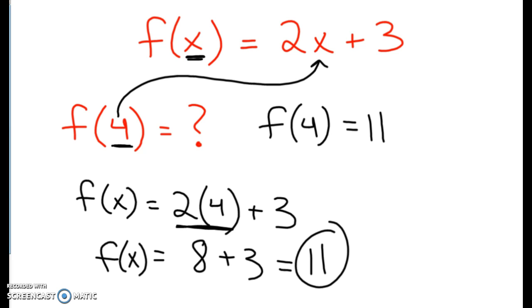And 4 was an input, because we were given the x value. And 11 would be our output value.